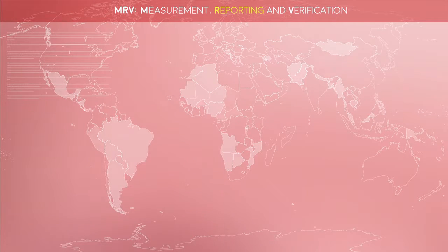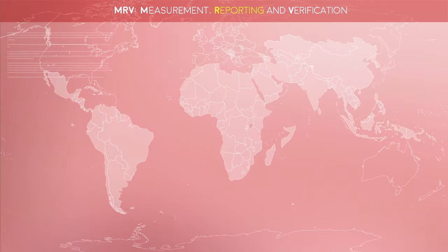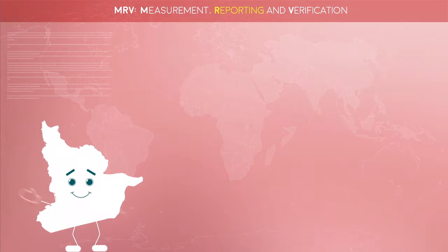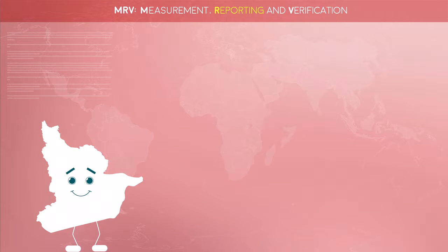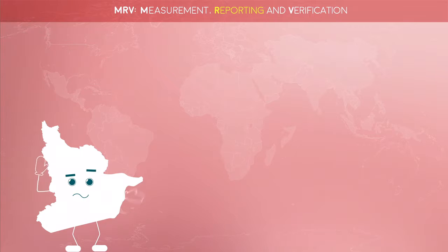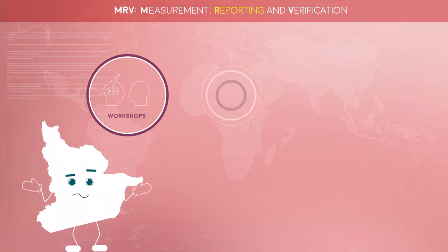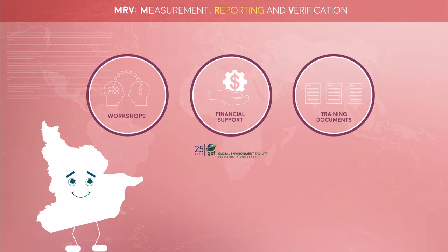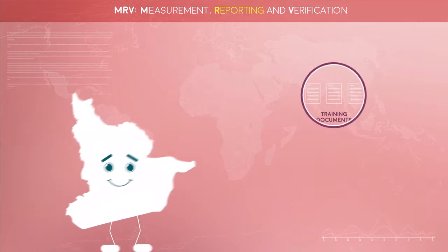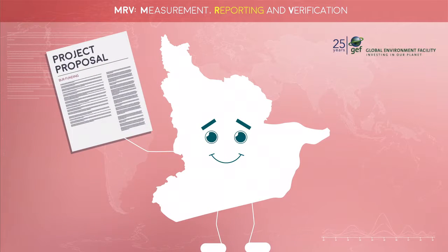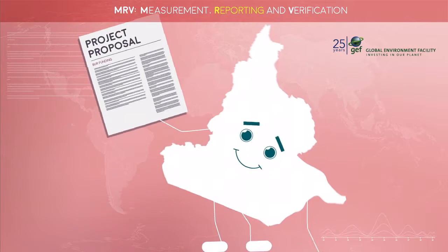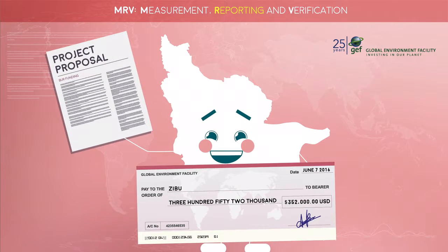Developing countries can access support for their BURs. ZIBU, our fictitious country, is here to help explain the entirety of MRV arrangements for developing countries. ZIBU wants to prepare a BUR, but since this is the first time, it needs a bit of help. Support and capacity building is available for ZIBU. So ZIBU prepares a project proposal to seek funding from the Global Environment Facility and receives 352,000 US dollars.